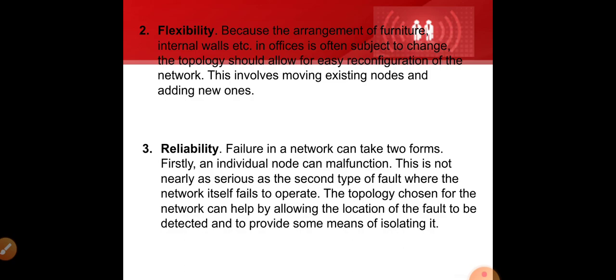Flexibility involves moving existing nodes and adding new ones. The topology should be very flexible and easy to use, because arrangements in offices, banks, and schools have walls and furniture, so it should be set up in a way that is easy to manage. Nodes are connected with each other, and a new computer system should be easily attachable. For example, if an office has 5 computers, it should be flexible enough to add more systems in the future.